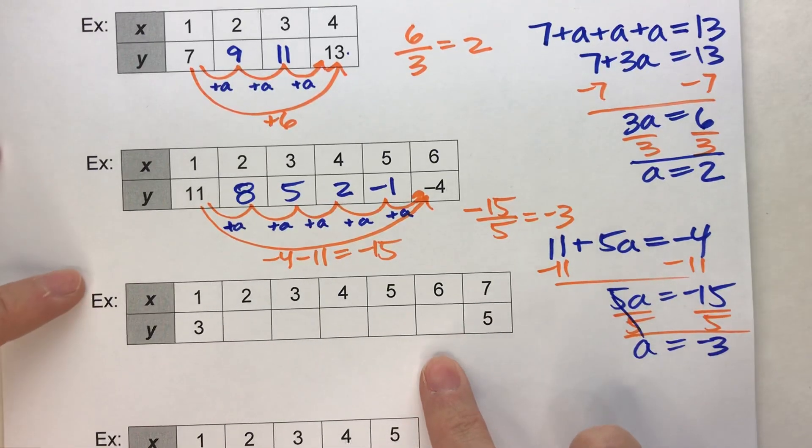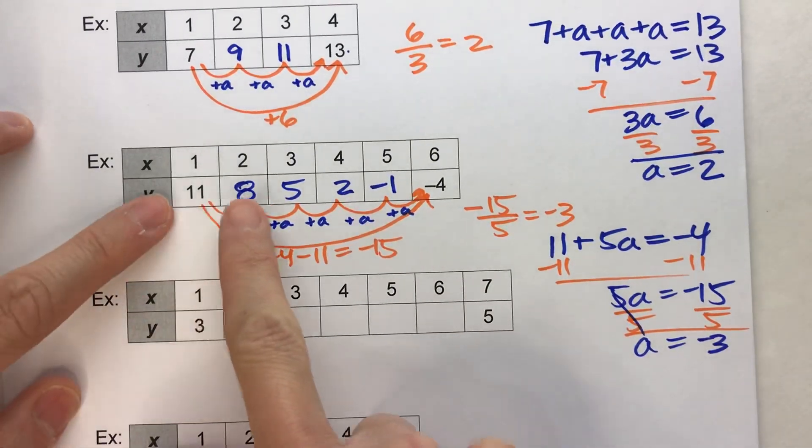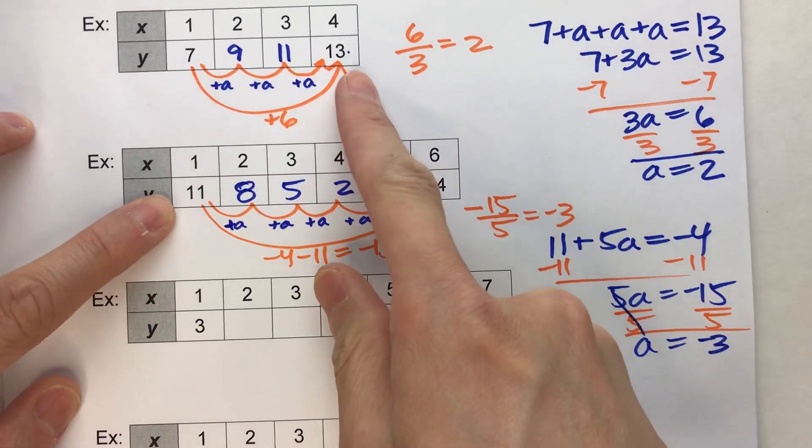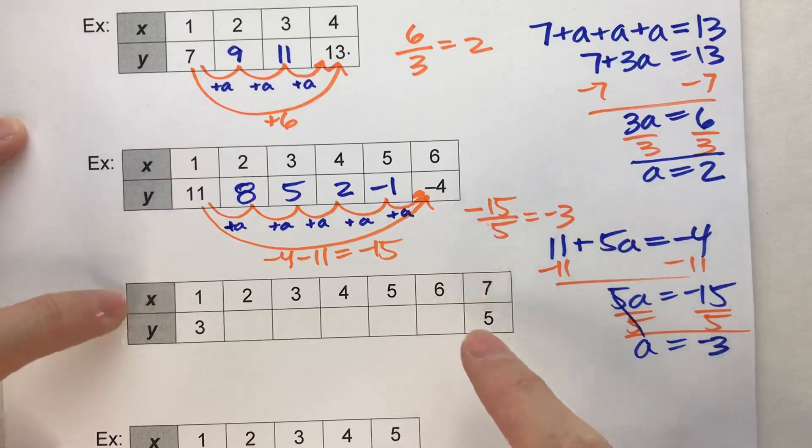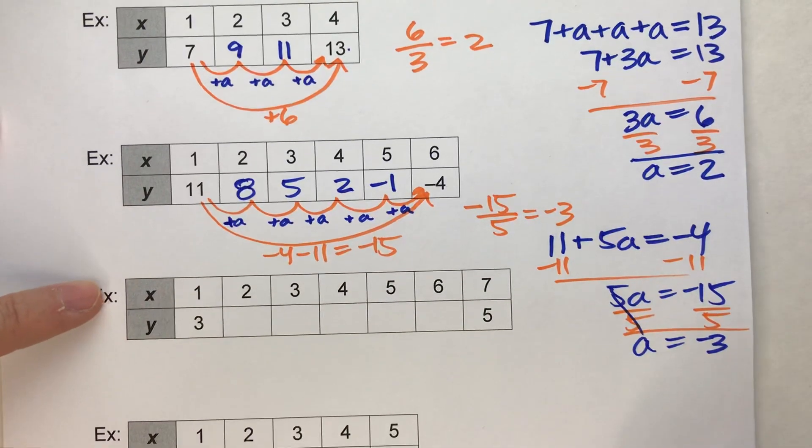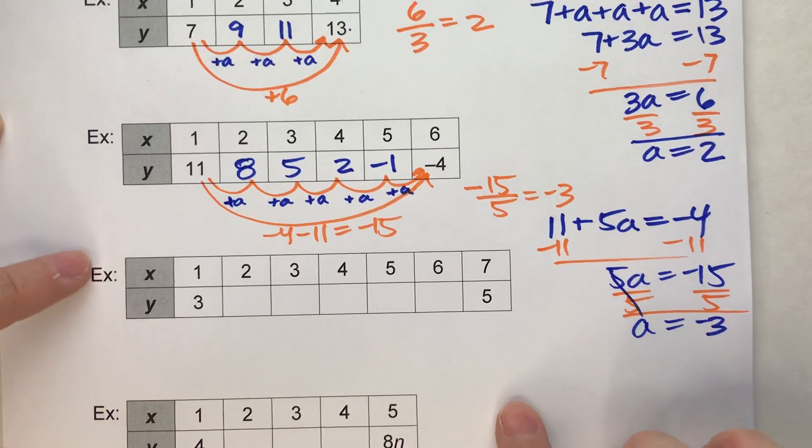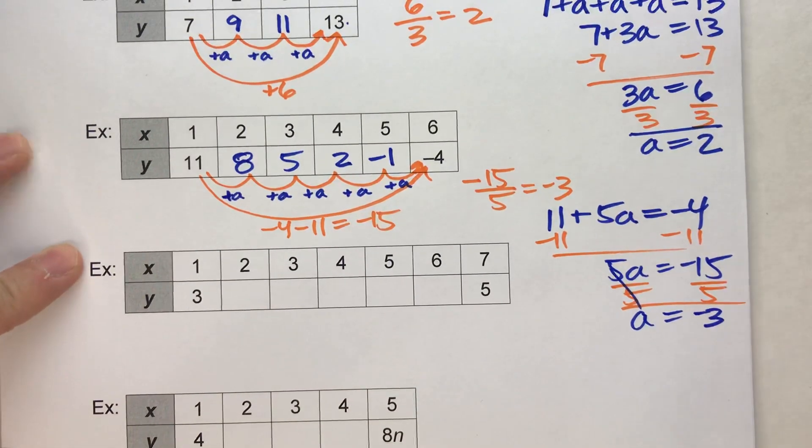Now, a couple things to remember is, one, it can go up or it can go down. It was adding before. This time it was subtracting. This next one, it's going to show you an example where we're not even adding a whole number each time. Let me show you what I mean.